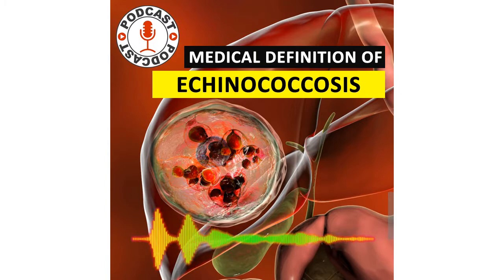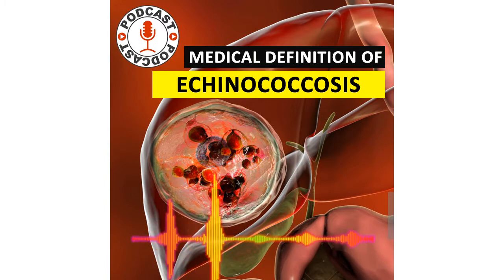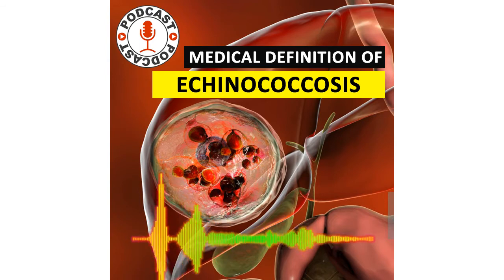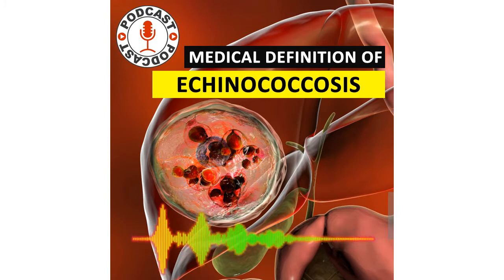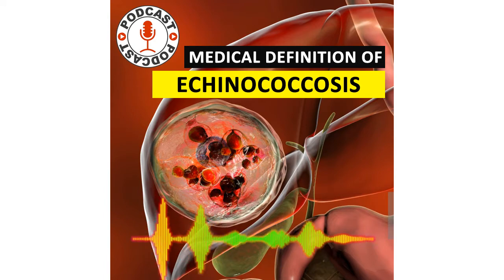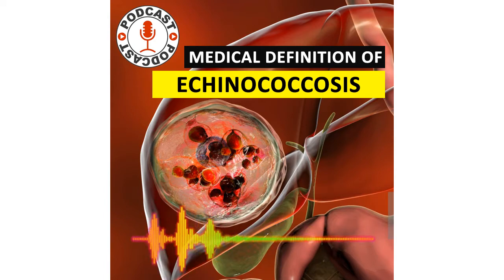Echinococcus multilocularis is found in Alpine, sub-Arctic, or Arctic regions, including Canada, the United States, and Central and Northern Europe and Asia, and causes multilocular lung disease known as alveolar hydatid disease. Echinococcus vogeli is found only in Central and South America and causes polycystic hydatid disease.